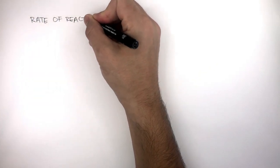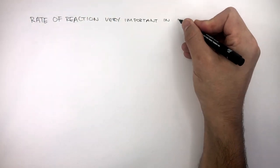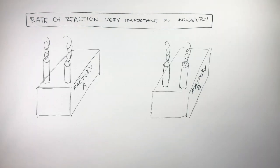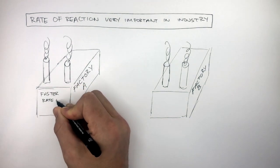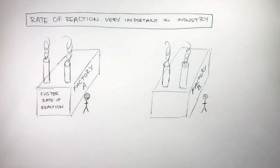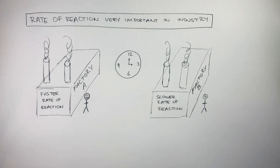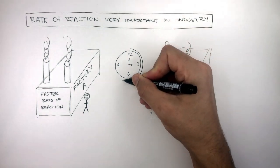Rate of reaction is very important in industry. Let's say we have factory A and factory B where they both produce the same product. Now, the owner of factory A uses a faster rate of reaction and the owner of factory B uses a slower rate of reaction. Now, both owners have the same amount of time in the day to produce their product. So, over 12 hours,